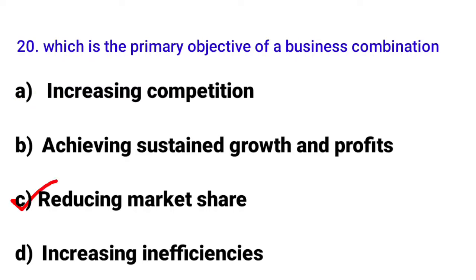Option B: reduced market share — that is not an objective, it's actually a concern. Option D: increasing inefficiencies — that would be a disadvantage, not an objective. So the answer is option B: achieving sustained growth and profits. The question could be phrased as 'achieving sustained growth and profits is the primary objective of business combination.'